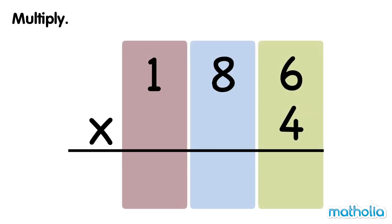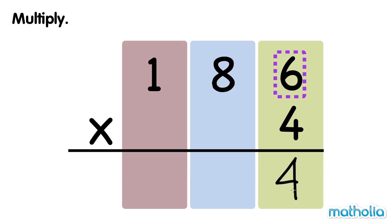Let's find 186 times 4. Multiply the ones by 4. 6 ones times 4 equals 24 ones. Regroup 24 ones into 4 ones and 2 tens.